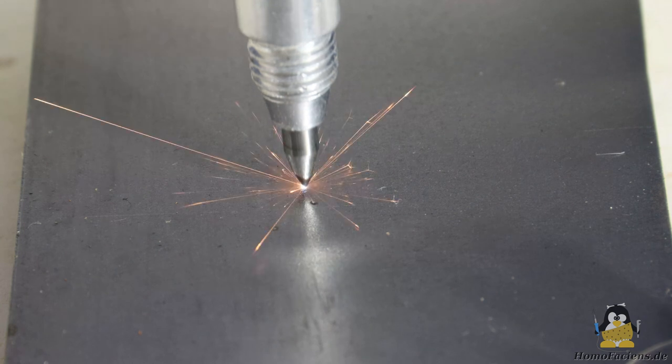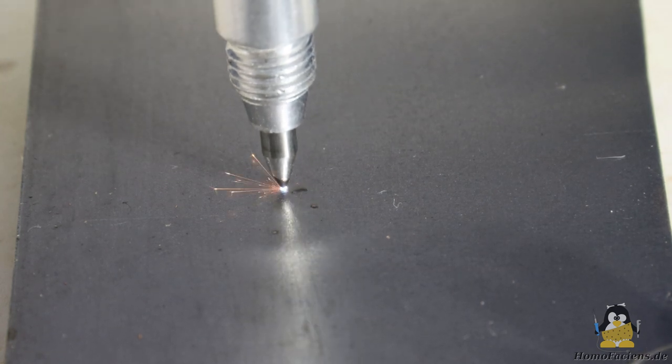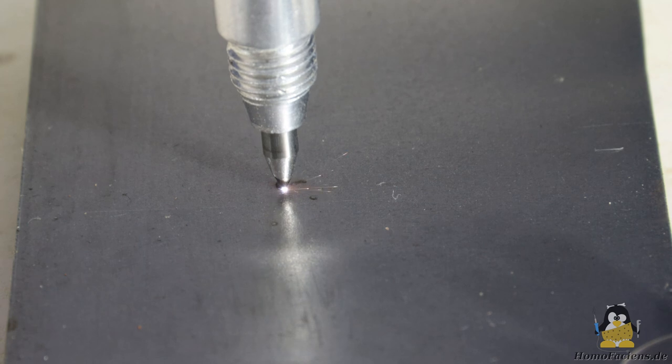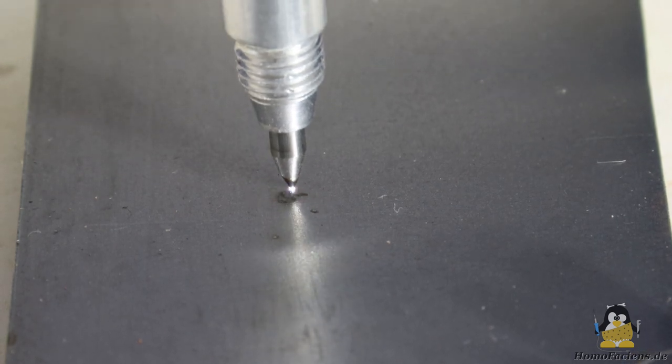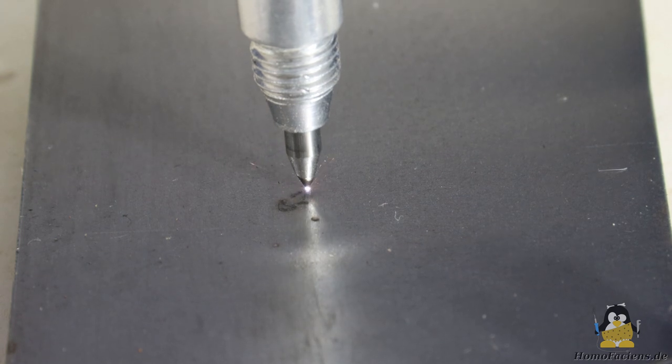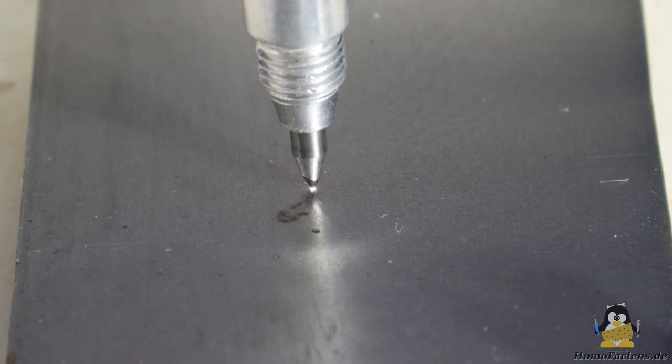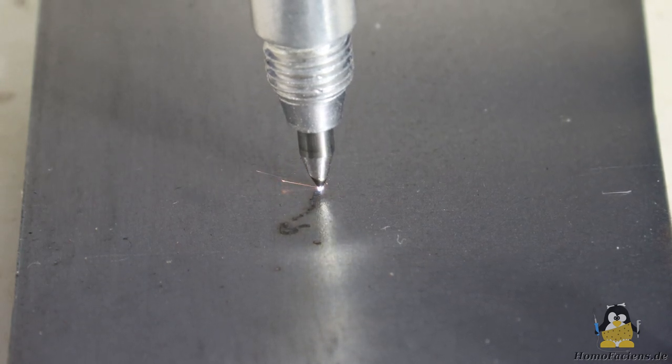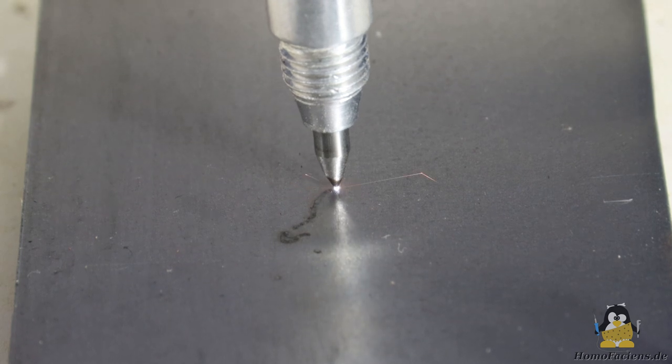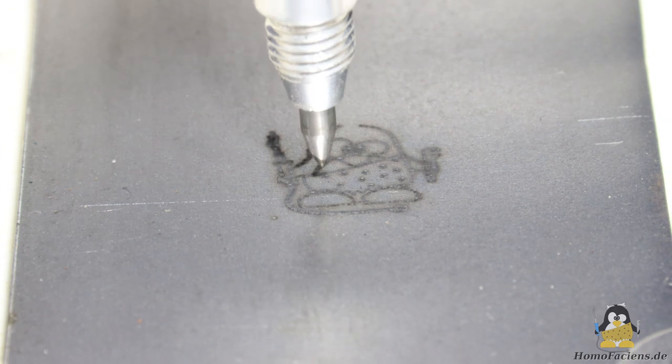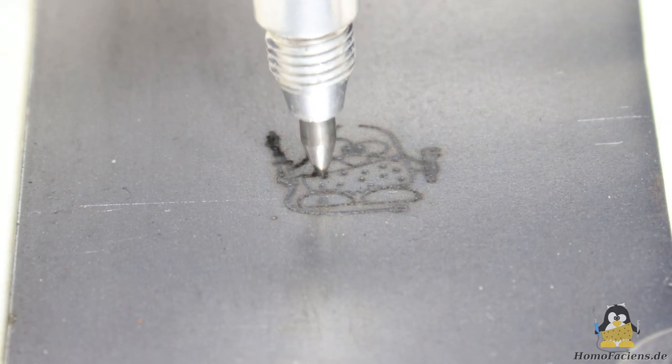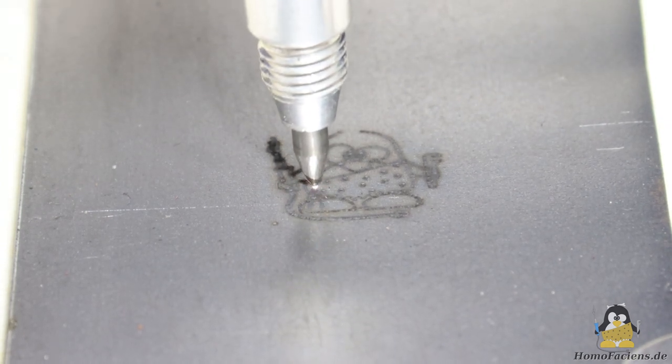At the lower end of the threaded rod there is a tool holder for various electrodes. First I use a tungsten tip for engraving. Such tungsten tips are also used in TIG welding and are quite resistant to erosion caused by sparking.